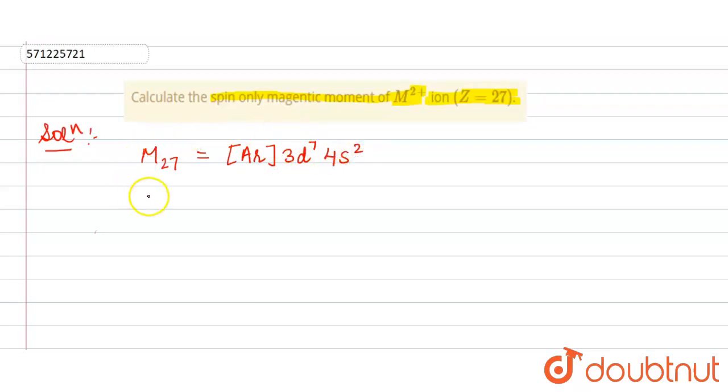In this question, we need to calculate the atomic mass in the form of M²⁺. Electronic configuration in the form of M²⁺ is argon 3d⁷.